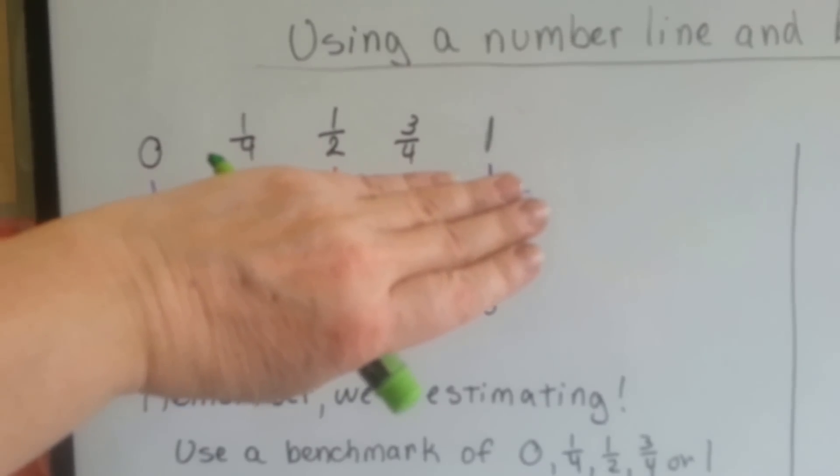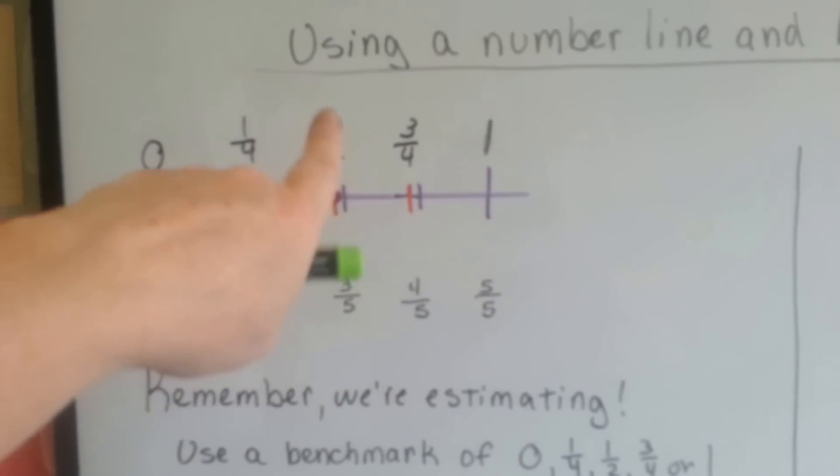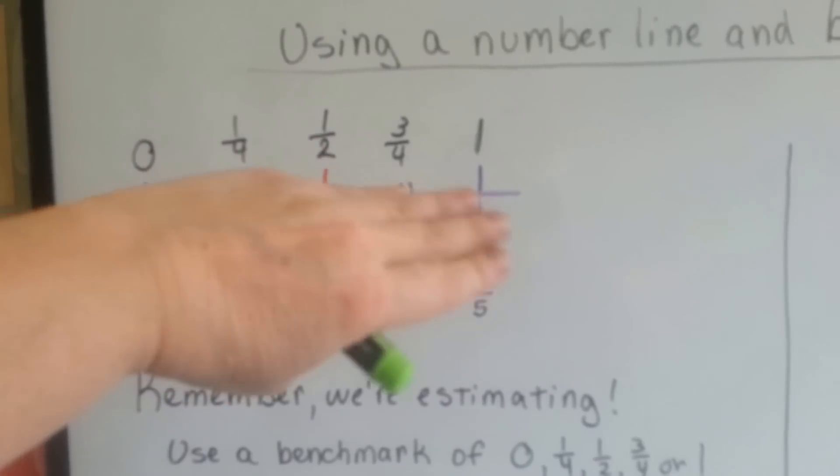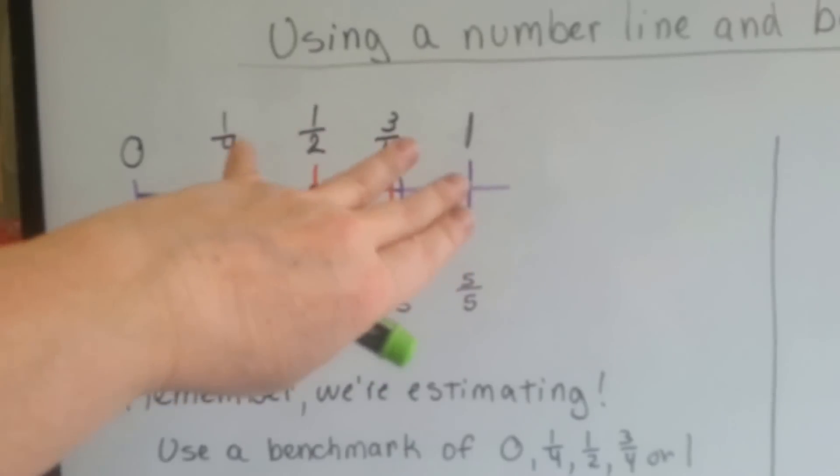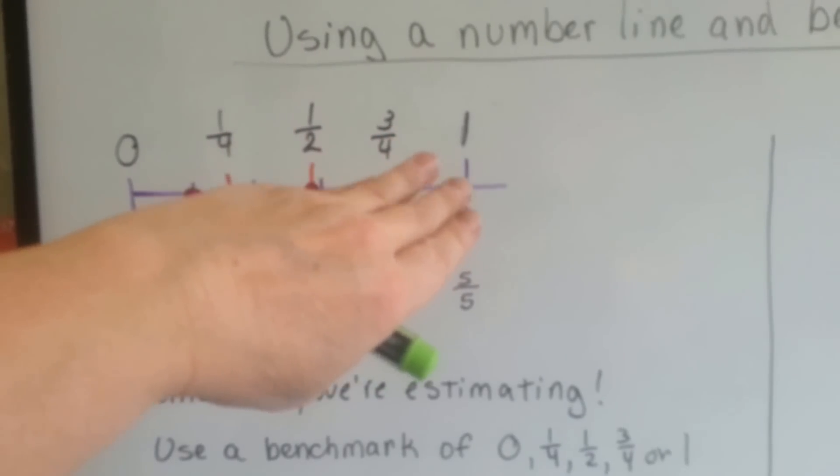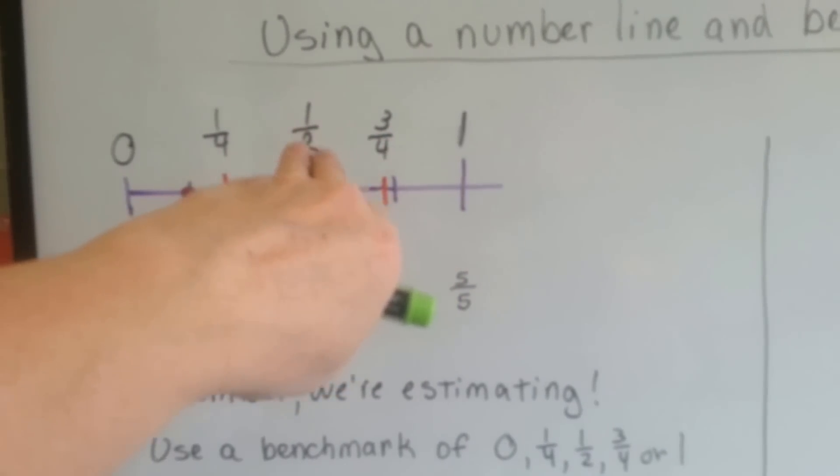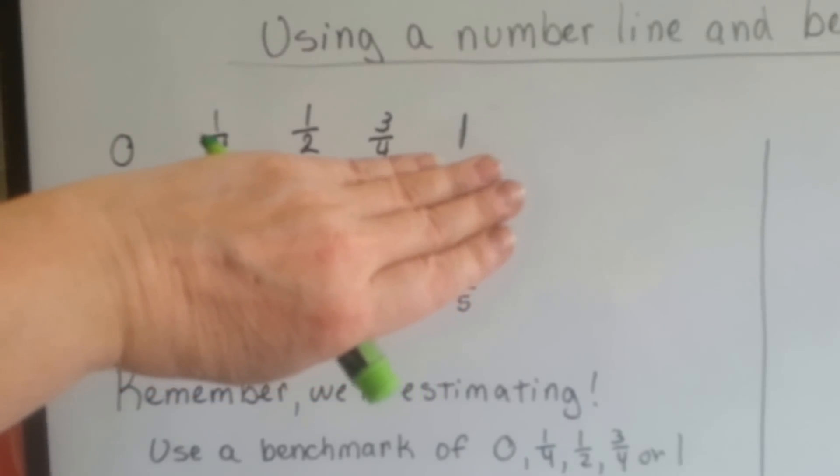If we had 0 and 1, we would know right in the middle is a half, so we would put that. Then we know that 1 fourth is right in between the 0 and the half, and 3 fourths is right in between the half and the 1. So we could make those as easy benchmarks.